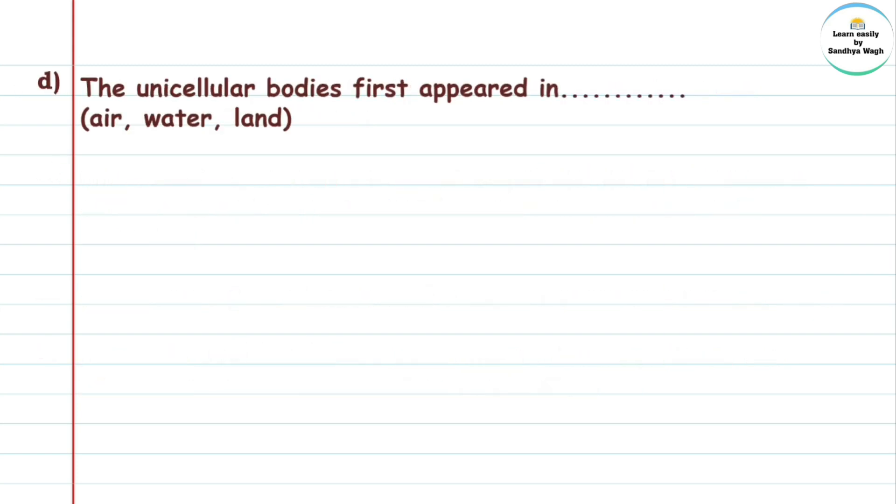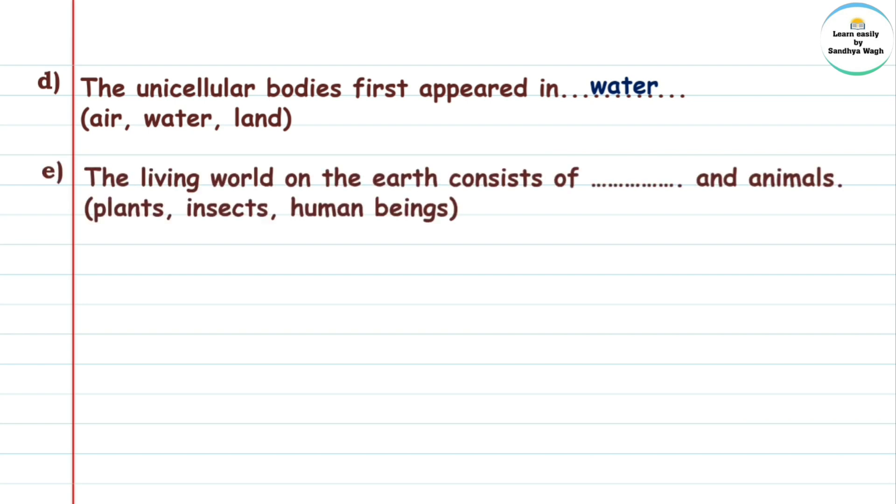Part d: The unicellular bodies first appeared in water. Options: air, water, or land. Answer: water. Part e: The living world on Earth consists of plants and animals. Options: animals, plants, insects, human beings. Answer: plants and animals.